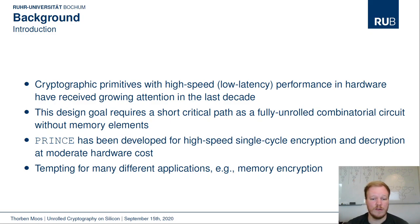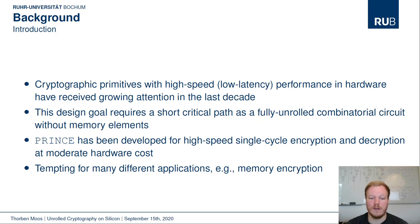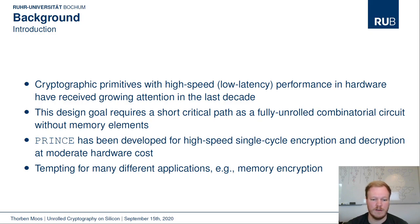Think of the PRESENT block cipher, for example, which can be implemented really tiny in hardware. But if you have to unroll 31 rounds, the result will be quite large and slow. A primitive which promises better performance in that regard is the PRINCE block cipher, developed specifically for high-speed single-cycle encryption and decryption at moderate hardware cost. It was proposed at AsiaCrypt 2012 and is probably well known in this community.